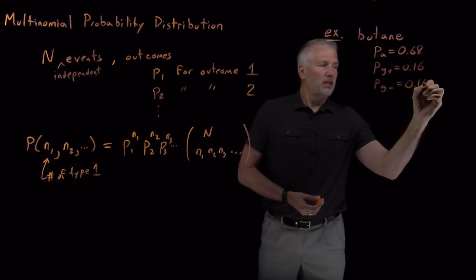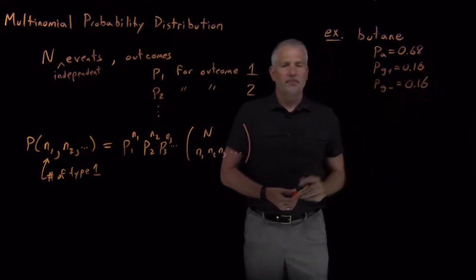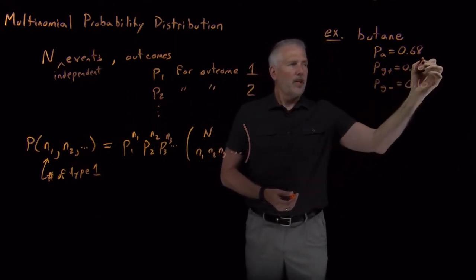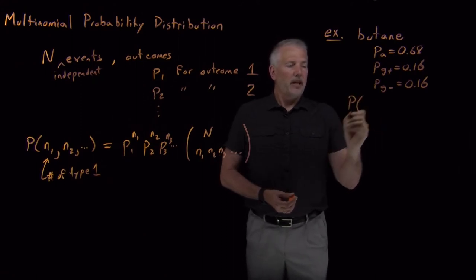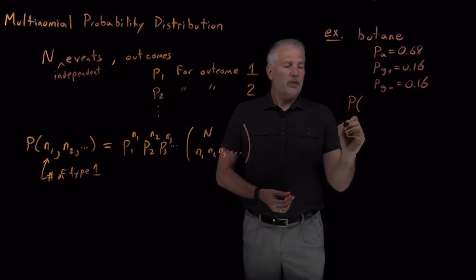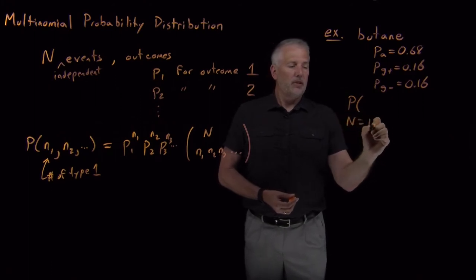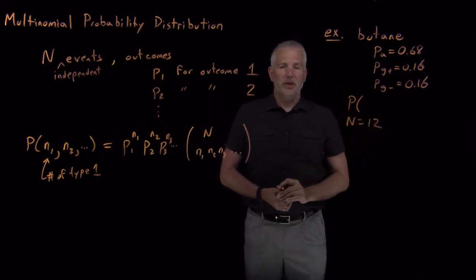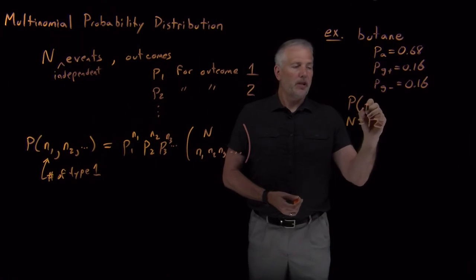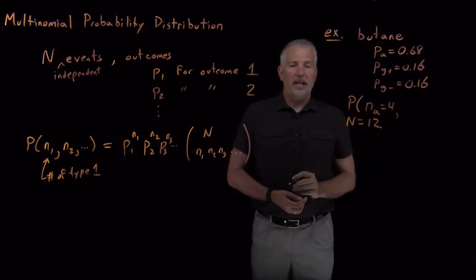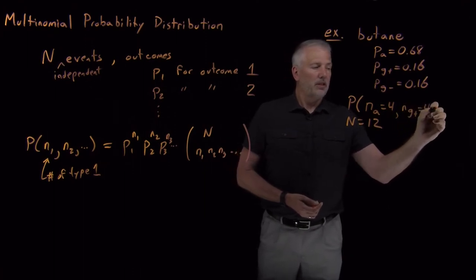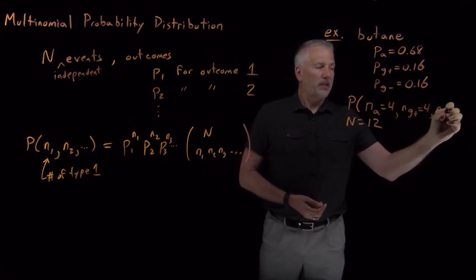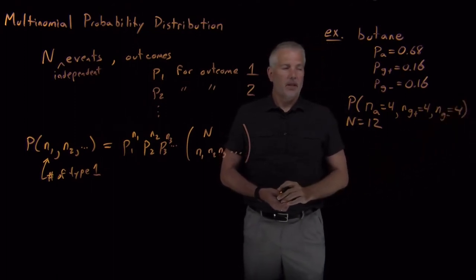And then what we'd like to know is, let's say, what is the probability that with n equals 12 butane molecules independent from one another, what's the probability that there are, let's say, four anti, four gauche-plus, and four gauche-minus. So equal number in each conformation.